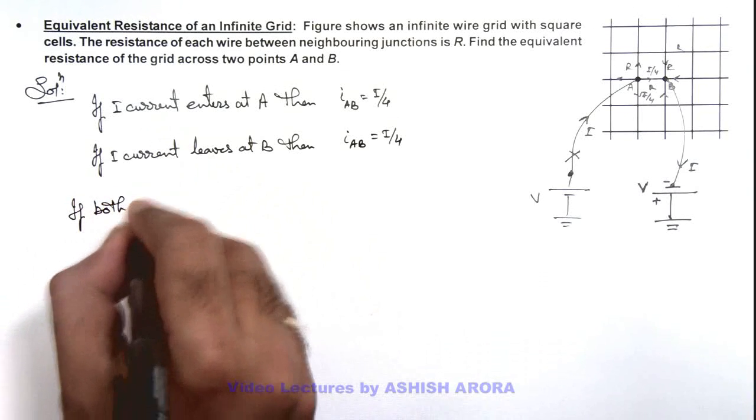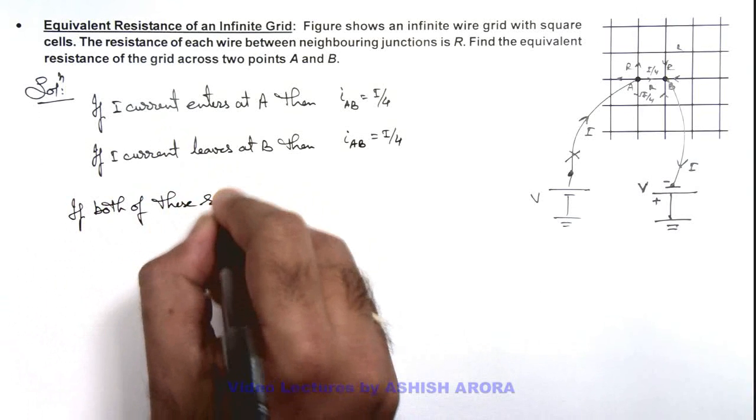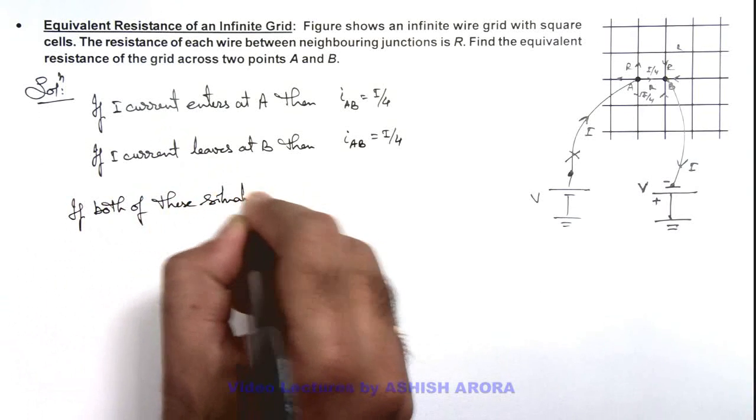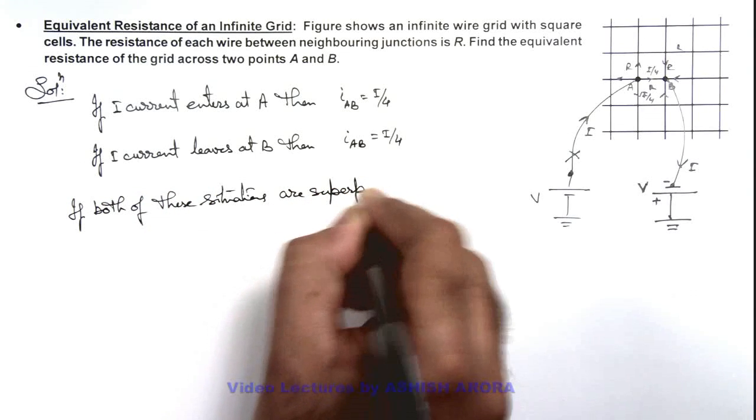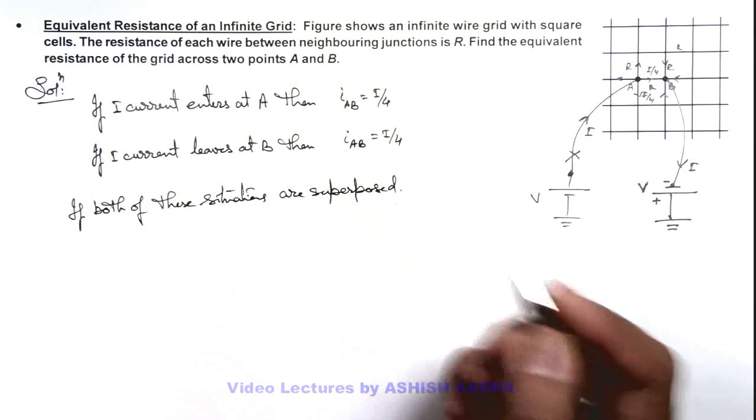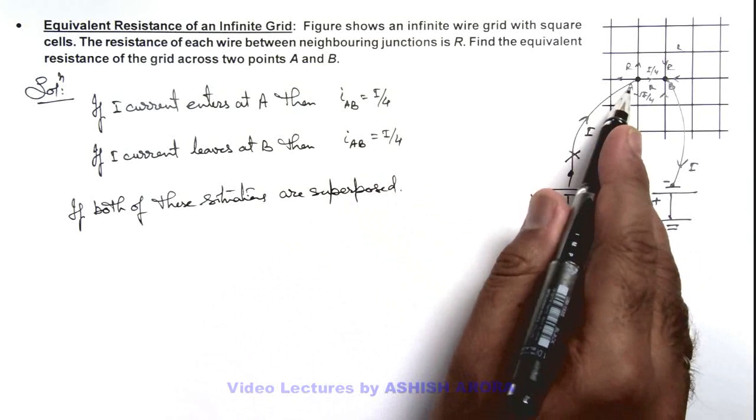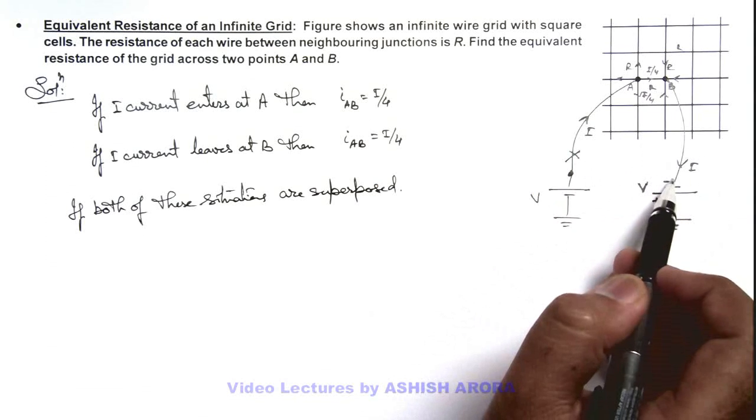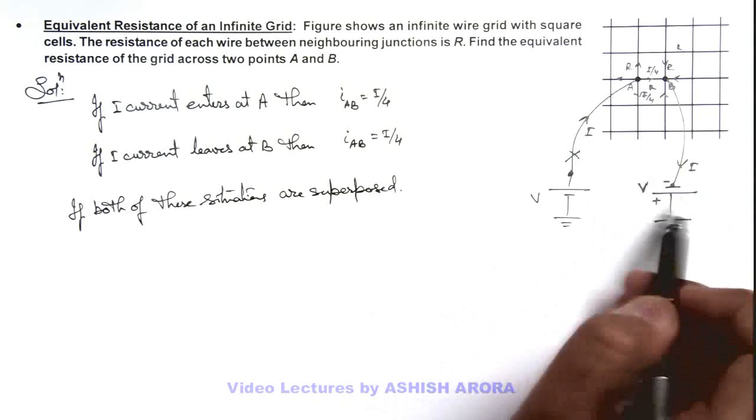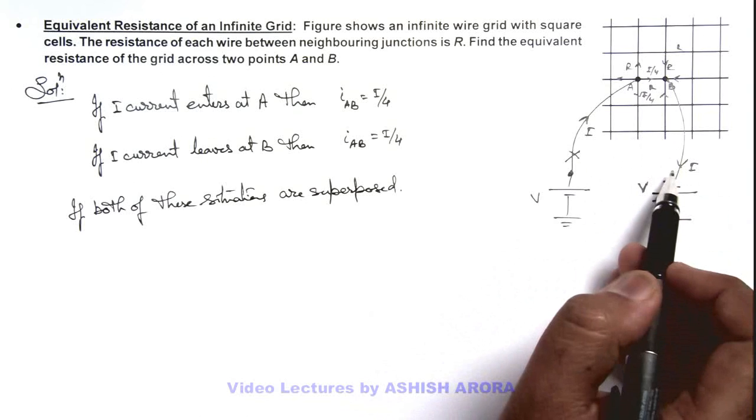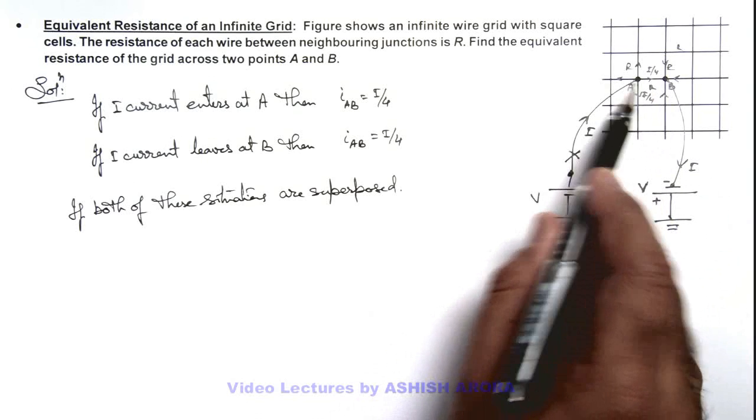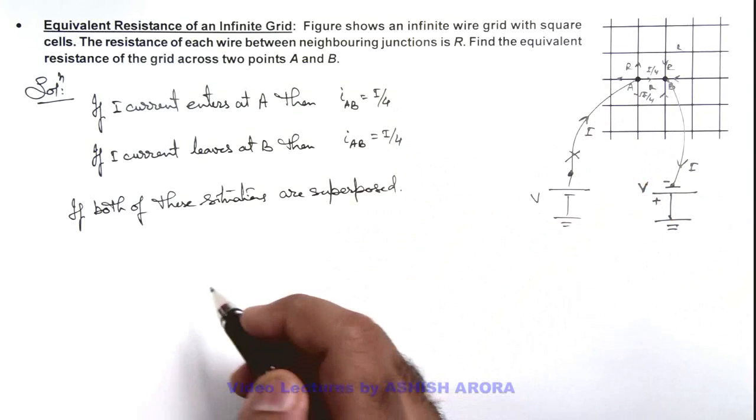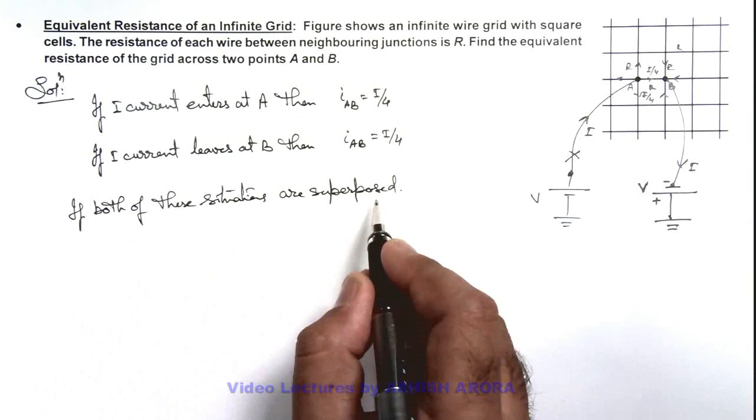So here if both of these situations are superposed, then we can say if a current I is getting at point A and I is leaving at point B, then simultaneously a battery of voltage V is connected between the two. Again a current I flows, but the current in the wire AB will be I by 2.